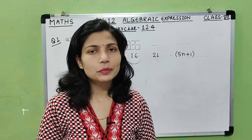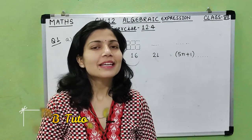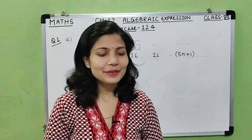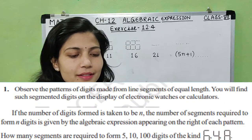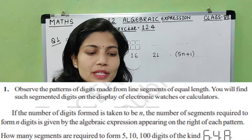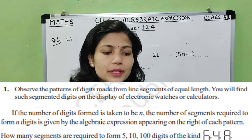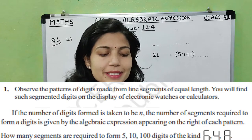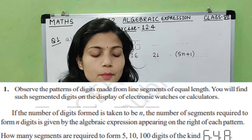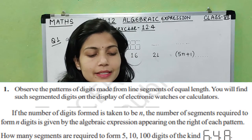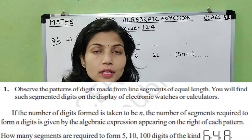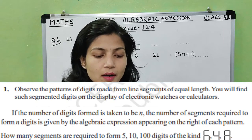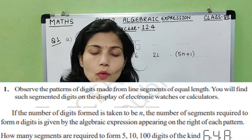Hello everyone, this is Bandini Sarma, welcome back to my channel BMB Tutorial. In the last session we discussed exercise 12.3, and in today's session we are going to see exercise 12.4. Question number one: observe the patterns of digits made from line segments of equal length, as found on electronic watches or calculators. If the number of digits formed is taken to be n, the number of segments required is given by the algebraic expression on the right. How many segments are required to form 5, 10, and 100 digits of the kind 6, 4, and 8?